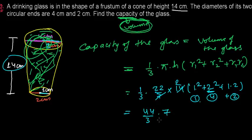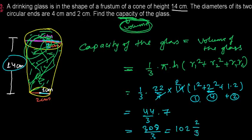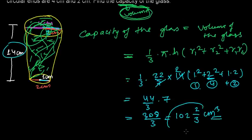So multiplying: (44/3) × 7 = 308/3. Dividing 308 by 3 gives us 102 and 2/3 cm³. This is the capacity of the drinking glass — meaning this much volume of anything, whether water, any liquid, or even air if it's empty, can be filled inside this drinking glass.